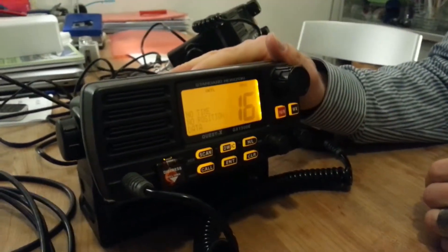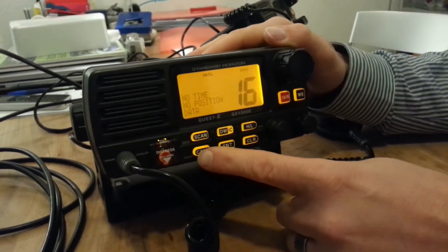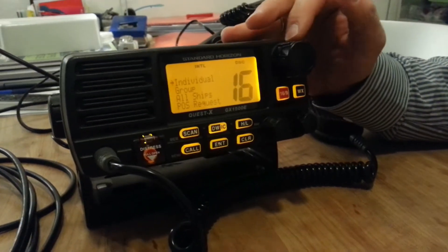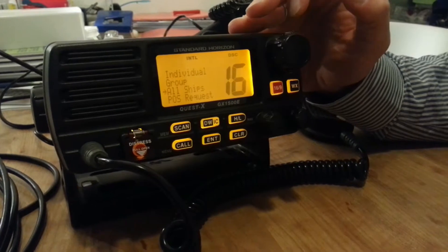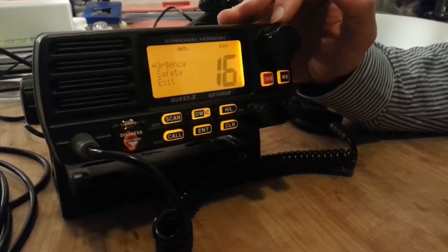If you have to transmit a DSC safety alert, go to the call button here, and then you have this menu of individual, group, all ships, position request, and more. You want to choose all ships, confirm by enter, and go for safety.